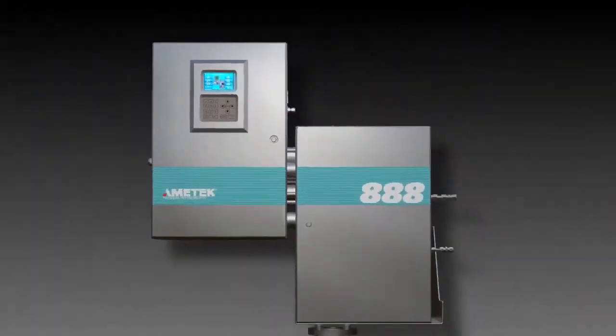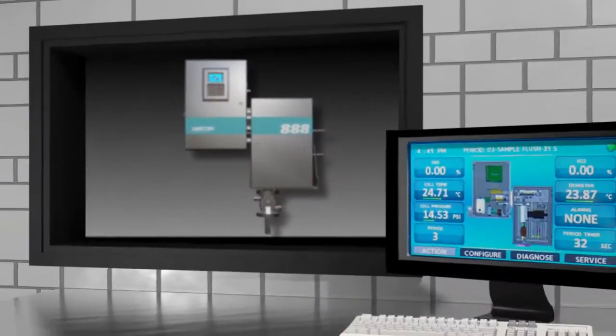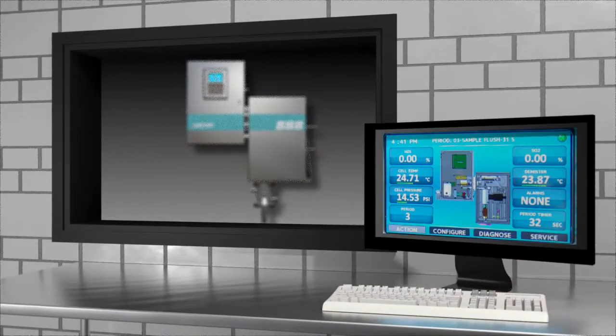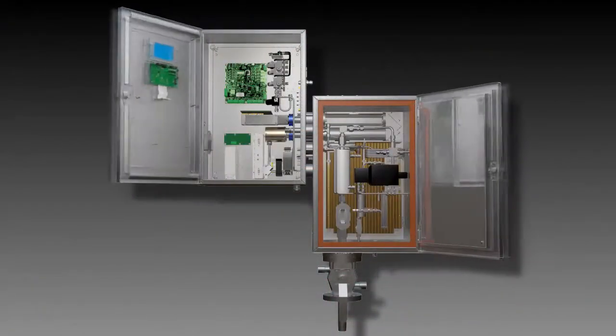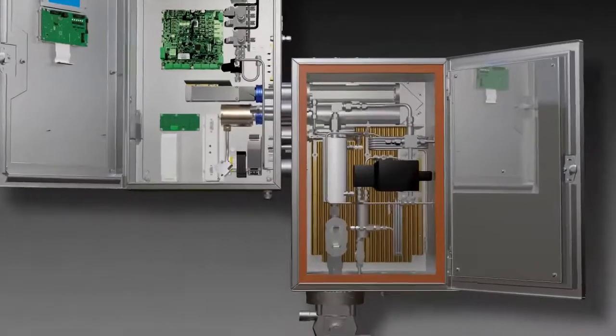The results are then transmitted to the distributive control system via built-in Ethernet and Modbus digital connections. The Model 888 addresses the most common external failure modes of previous generation analyzers: one being ingress of entrained sulfur liquid from the process, and the other being poor quality steam heating.